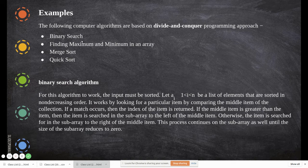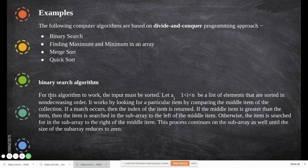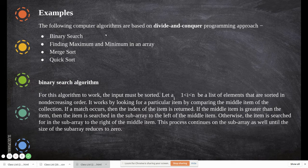Now we will see the binary search algorithm. If you take an array with many values and you want to search for a particular value, the first rule in binary search is that the array must be in sorted order. This is the first criteria — if the array is not sorted, you cannot execute binary search; it would become a linear search instead.